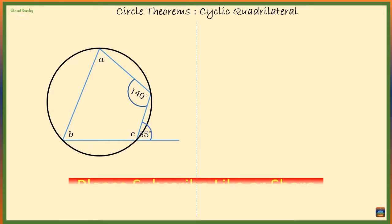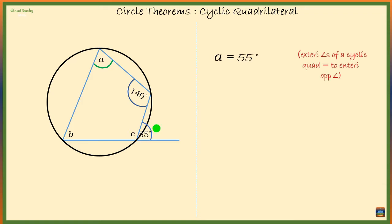So starting with angle A, angle A is equal to 55 degrees. The reason being the exterior angle of a cyclic quadrilateral is equal to the interior opposite angle.